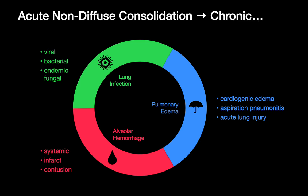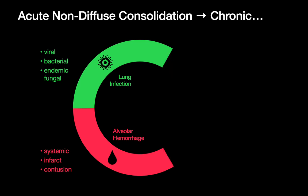If we look at this list, we can see that the entities in the pulmonary edema category all play out on an acute time frame, so those will be unlikely considerations for a process that grinds on for weeks if not months. The same can be said about diagnoses within the alveolar hemorrhage category — these are unlikely to play out continuously over weeks to months.